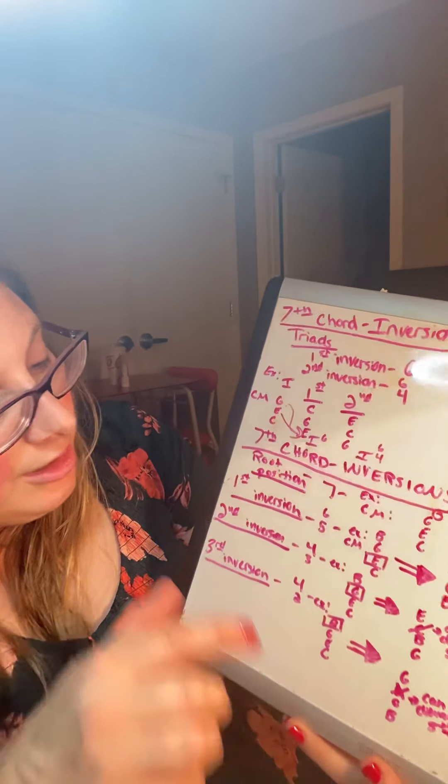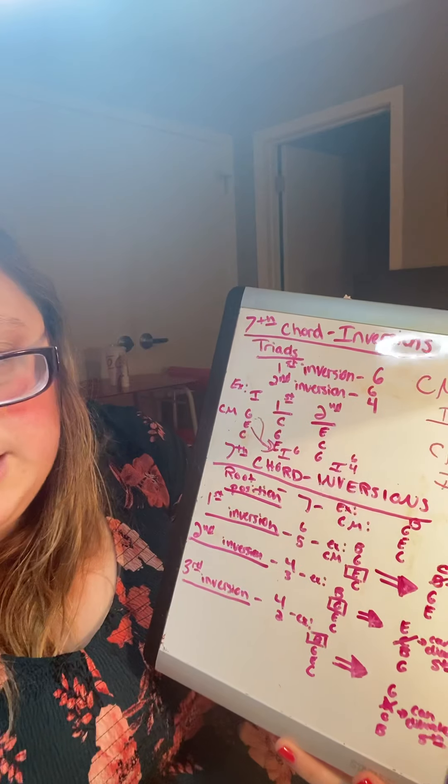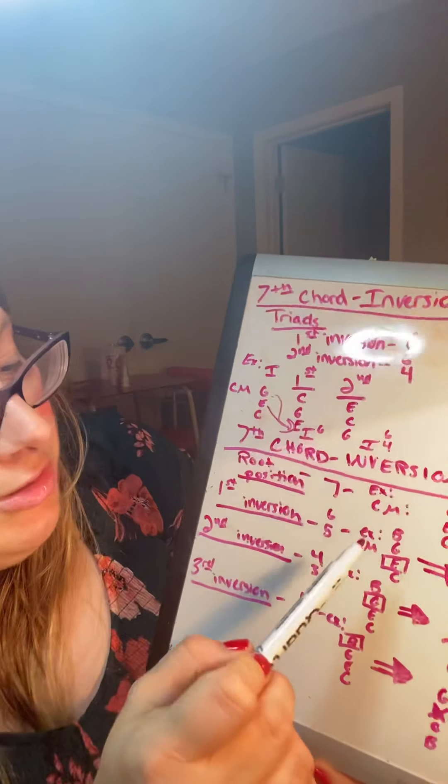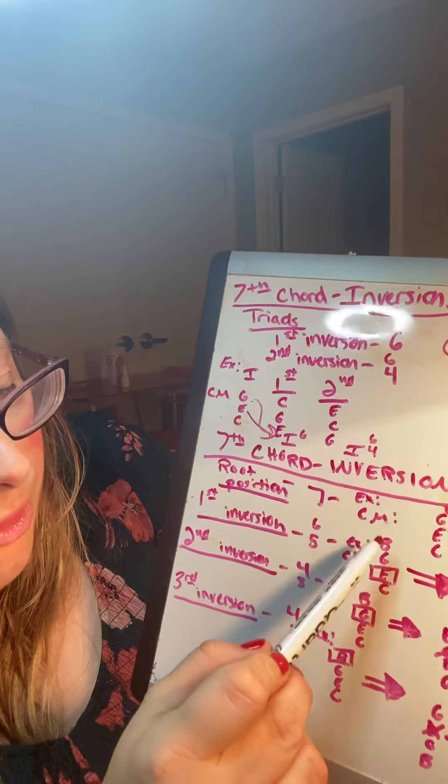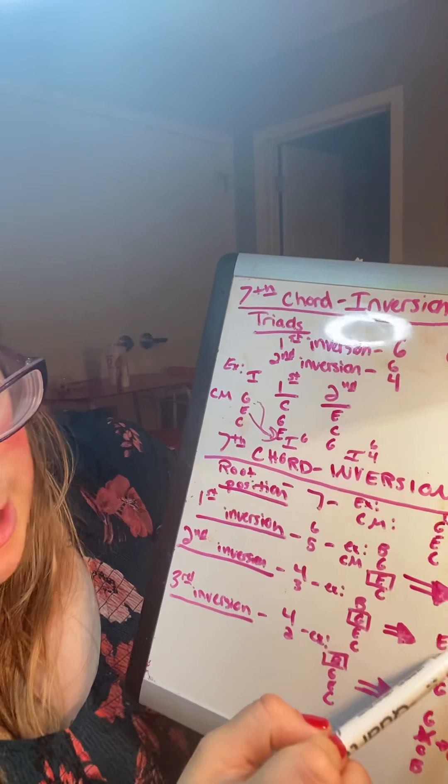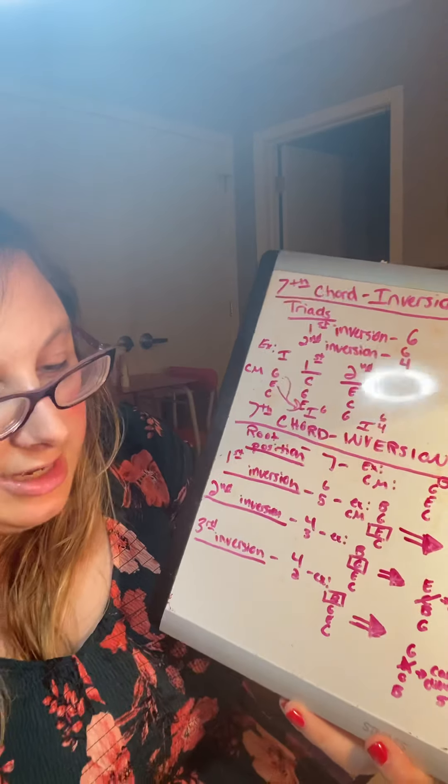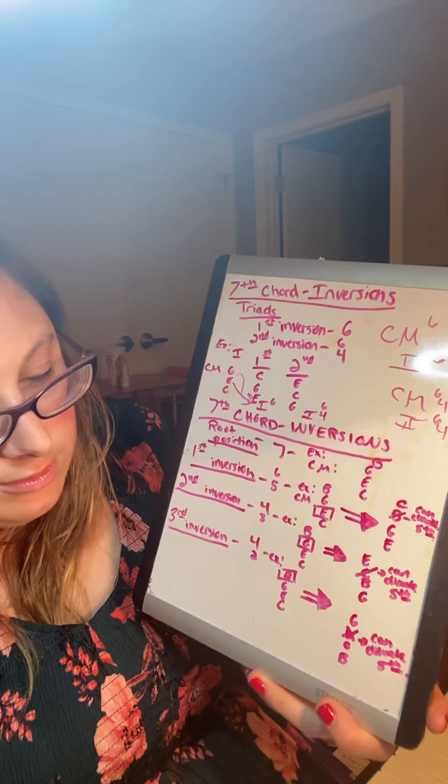From there, you're going to do your first inversion. So that means just like we did before with our triads, you take the third note in the whole chord and that becomes your root position. So it ended up being E, G, B, C.